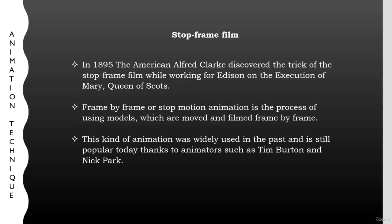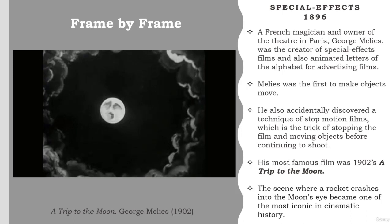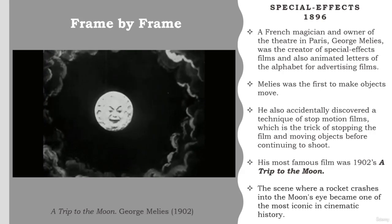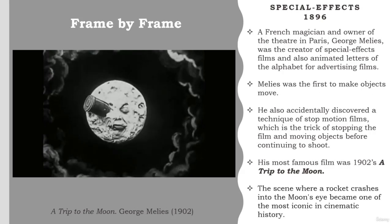The American Alfred Clarke in 1895 discovered the trick of the stop frame film while working for Edison on the execution of Mary, Queen of Scots. At the crucial moment of the execution, Clarke stopped the camera, substituted a puppet for the actress who was going to be beheaded, and started the camera again. Frame-by-frame, or stop motion animation, is the process of using models which are moved and filmed frame by frame. This is perhaps the oldest kind of animation, and was widely used in the past and is still popular today, thanks to animators such as Tim Burton and Nick Park. A French magician and owner of a theatre in Paris, Georges Méliès, was the creator of special effects films and also animated letters of the alphabet for advertising films.